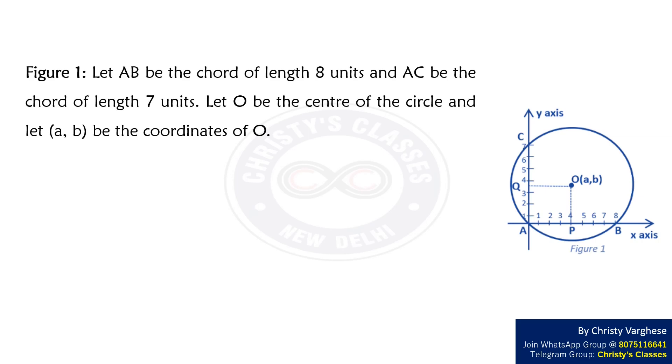Consider Figure 1. Let AB be the chord of length 8 units and AC be the chord of length 7 units. Let O be the center of the circle and let (a,b) be the coordinates of O. We have to find the values of a and b.